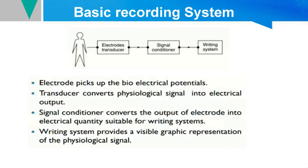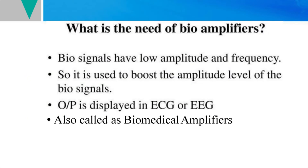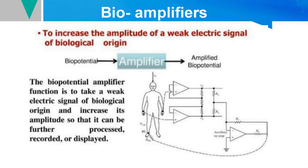What is the need for bioamplifiers? The biological signals picked up from the body have a very low amplitude and frequency. In order to boost up the amplitude and frequency level of these biological signals, bioamplifiers are placed in place of the signal conditioner, acting as an intermediate between the bioelectrodes and the output unit. They can also be called biomedical amplifiers or biological amplifiers, and their purpose is to increase or boost the weak signals picked up from the patient's body.